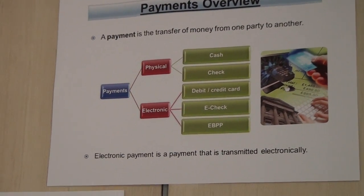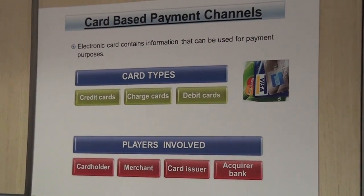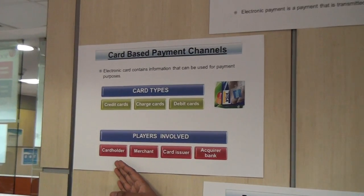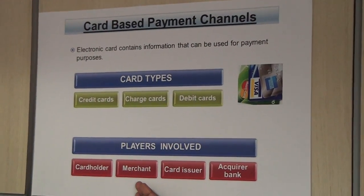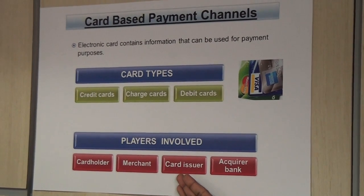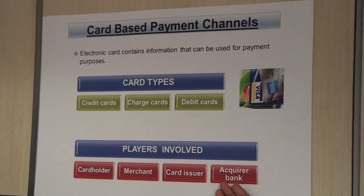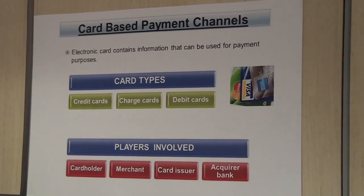Now let's have a look at the players involved in electronic processing. The first one is cardholder, the second one is merchant, the cardholder is making a payment. Then the third one is card issuer, which is the cardholder's bank. And the fourth one is acquirer bank. Now let's see into detail of how this payment processing is done.